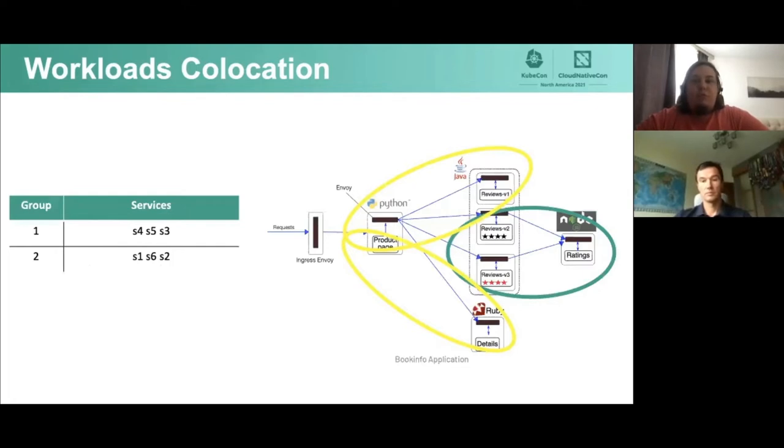We have two groups of BookInfo services in our cluster, yellow and green teams. Services product page, reviews version 1, and details were included in Group 1. Services reviews version 2 and 3, and ratings fell into the second group. Great, the approach works. Let's see what we can do about it.